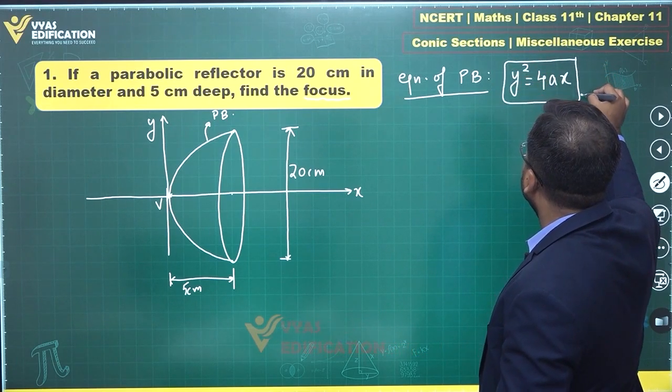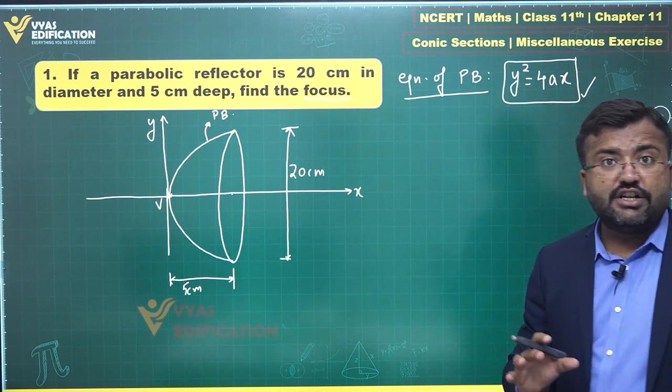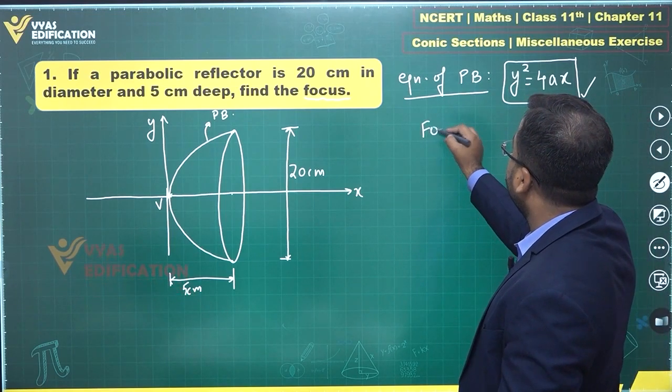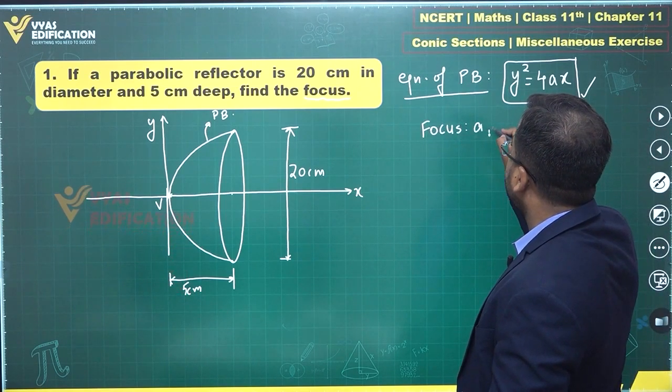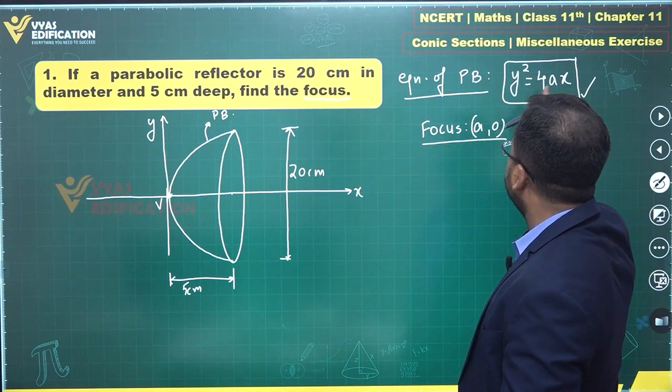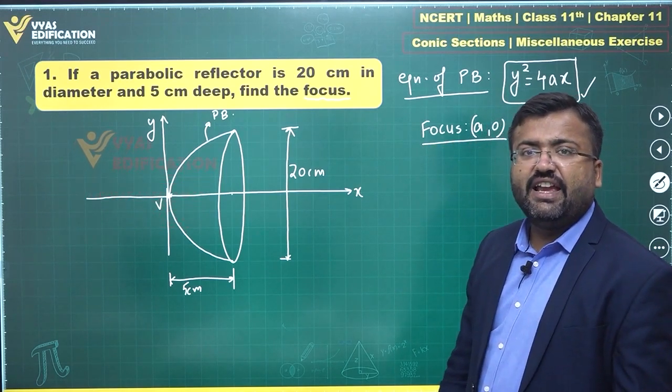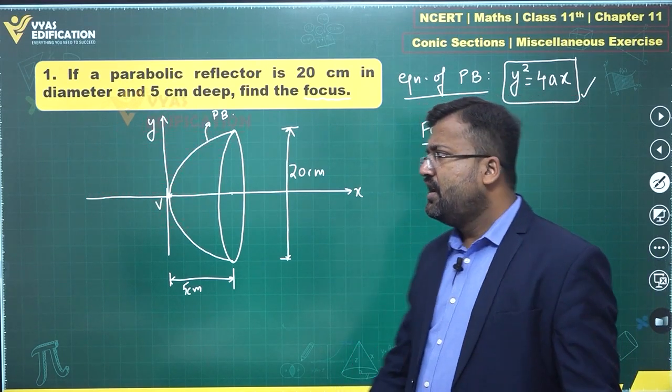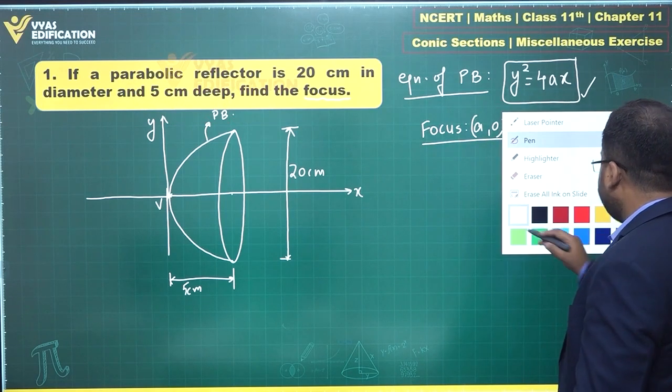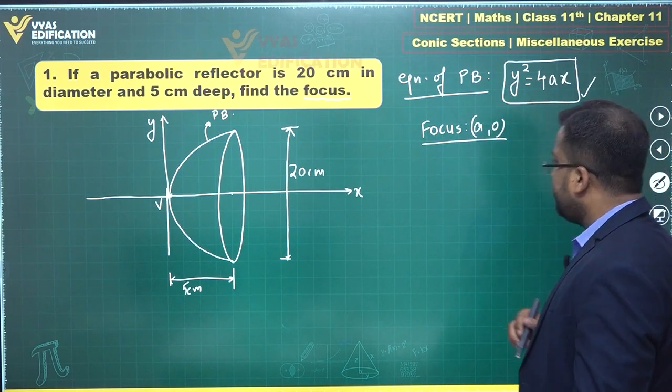And if you can find this equation, then you can find the coordinates of focus. Focus will be at (a, 0). So, our target is to find a somehow and for finding a, are we given some condition? Please observe, we are given one condition and what is that? We are given some dimensions.